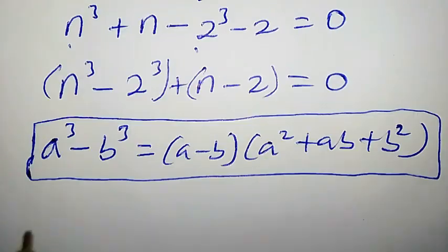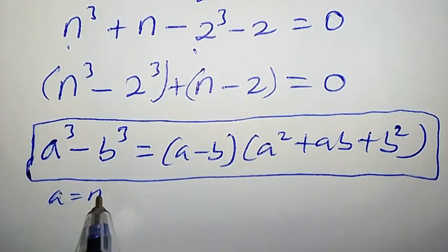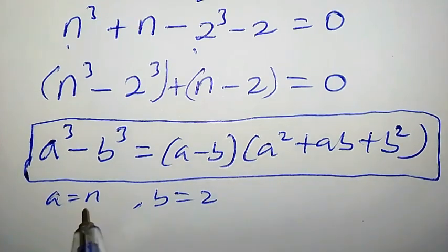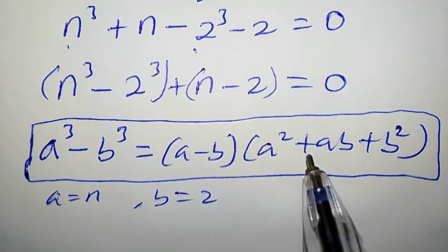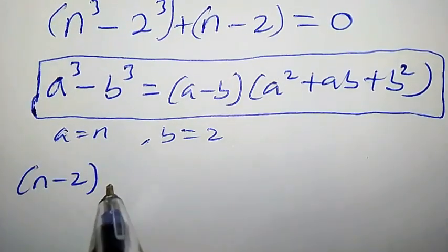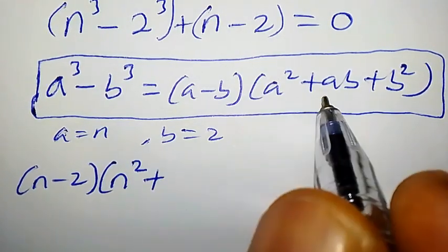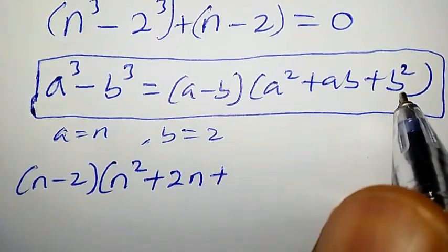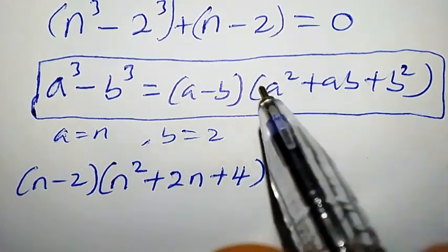Comparing the left-hand side with this formula, you will observe that our a is n and our b is 2. So let's substitute: a is n and b is 2 into the right-hand side. We get n minus 2, times n² plus 2n plus 4, plus the remaining term n minus 2.